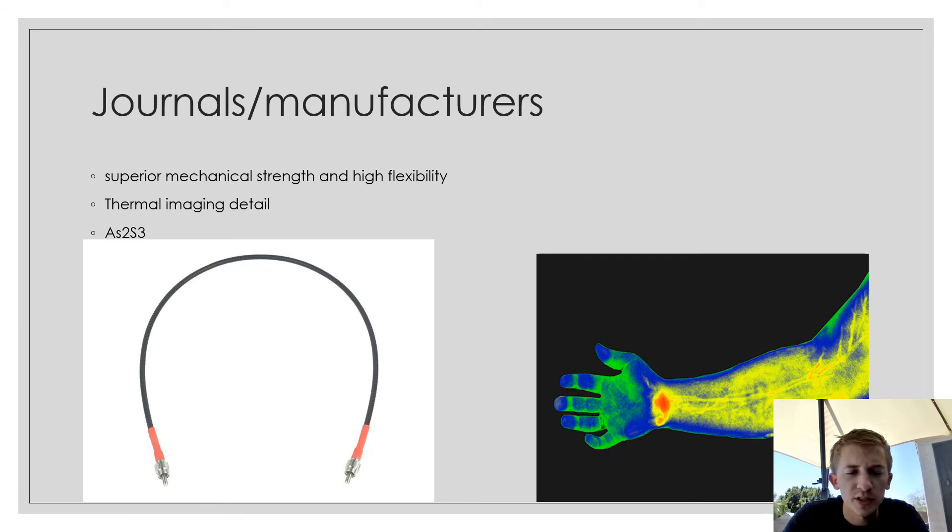In the next few slides here, I'm going to be talking about some journals, and this is from a manufacturer. You can see there's a lot of detail for the thermal imaging. This cable here is the arsenic trisulfide, which helps reduce the data loss.